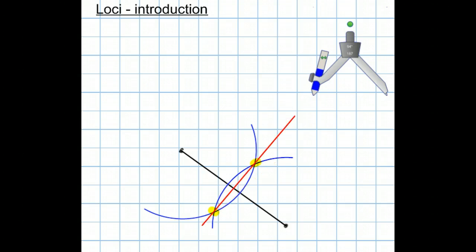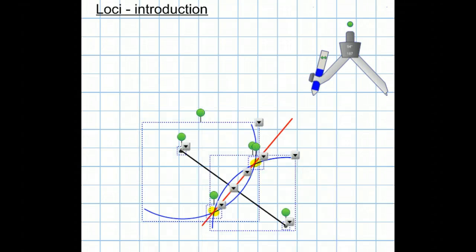And then I join up these two points here where the arcs met. And the line I've drawn there bisects that line segment in two. And allegedly it should do it at 90 degrees. You'll have to take it on trust there. So that's how we bisect a line.